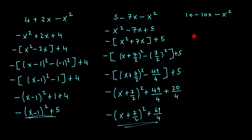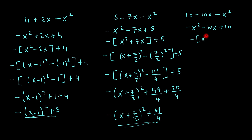Let's look at the next one. Why don't you pause the video and just try the third one and see if you get the right answer. Okay, so let's go ahead and do this. So that would be minus x squared minus 10x plus 10. Once again, I take my minus out, and that would give me x squared plus 10x plus 10.